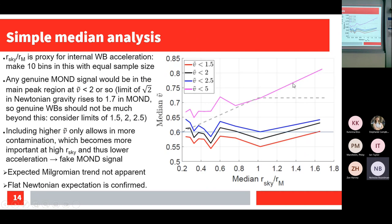The results show a flat trend — the Newtonian expectation is confirmed and the MOND expectation seems completely incorrect. The pink curve at ṽ < 5 shows a slight rise, but that includes more contamination, which is more important at high separations but also lower acceleration, potentially creating a fake MOND signal. With about 1000 systems per bin, uncertainties are typically ~0.02, so the scatter seen in the black line is expected.